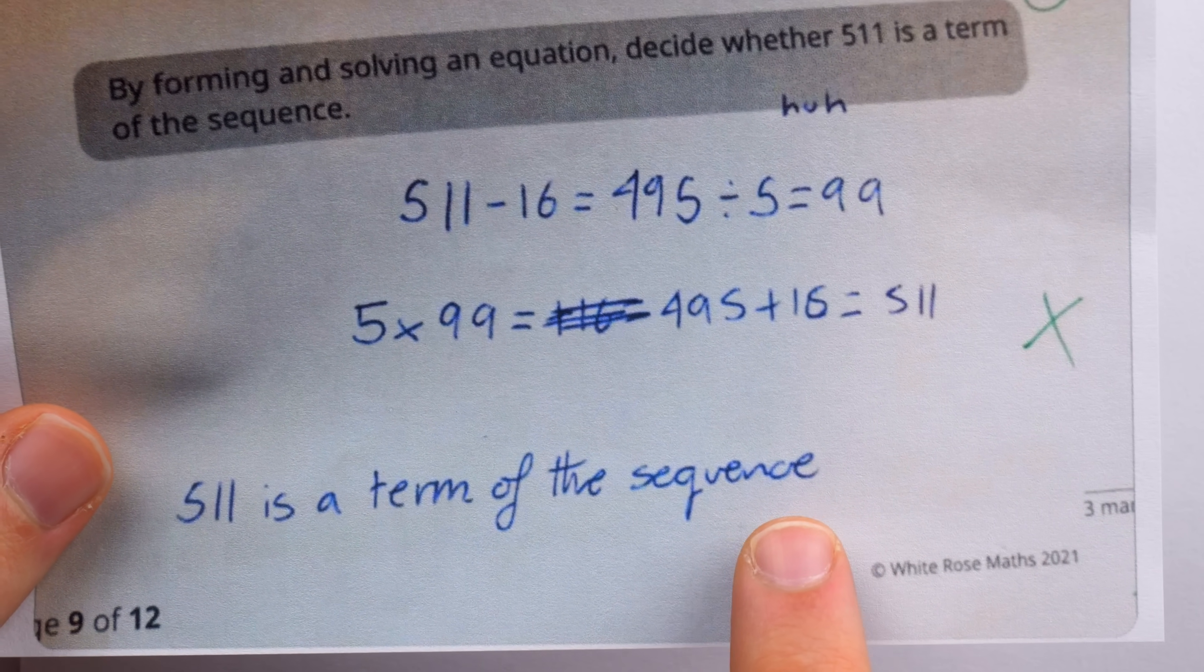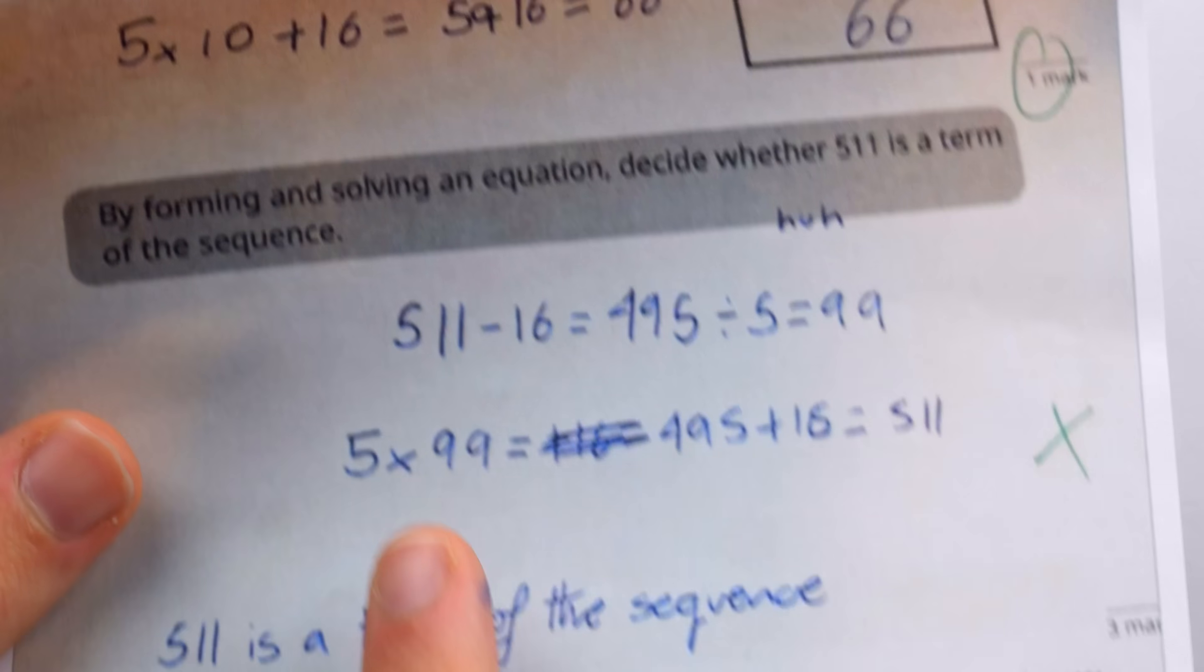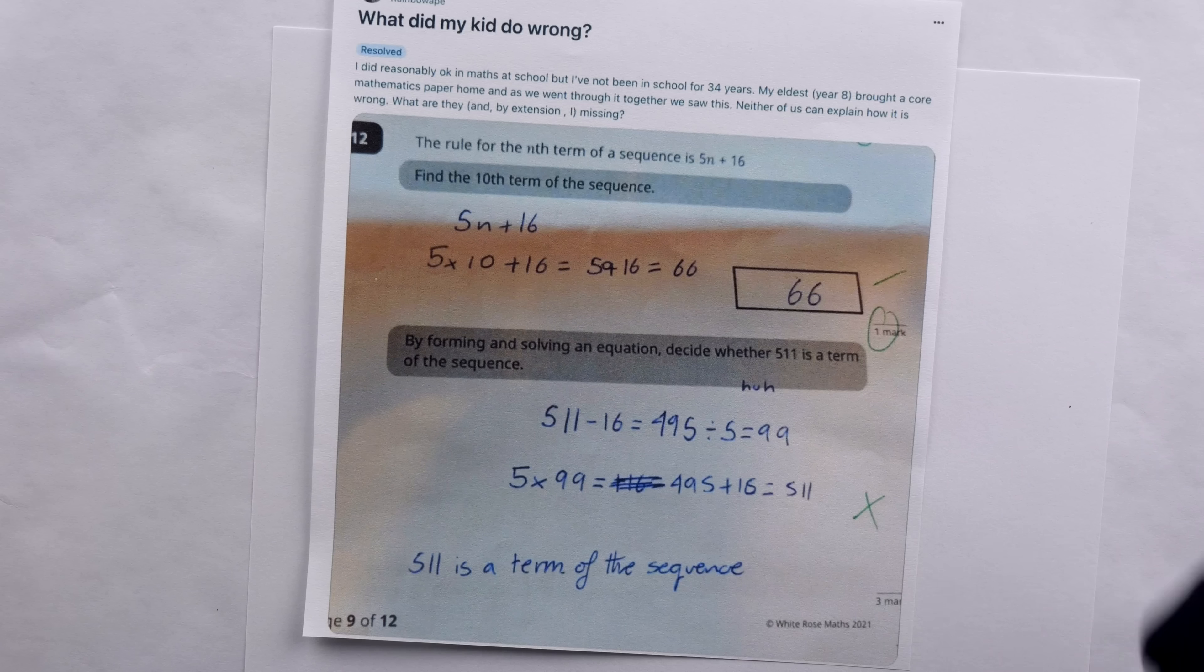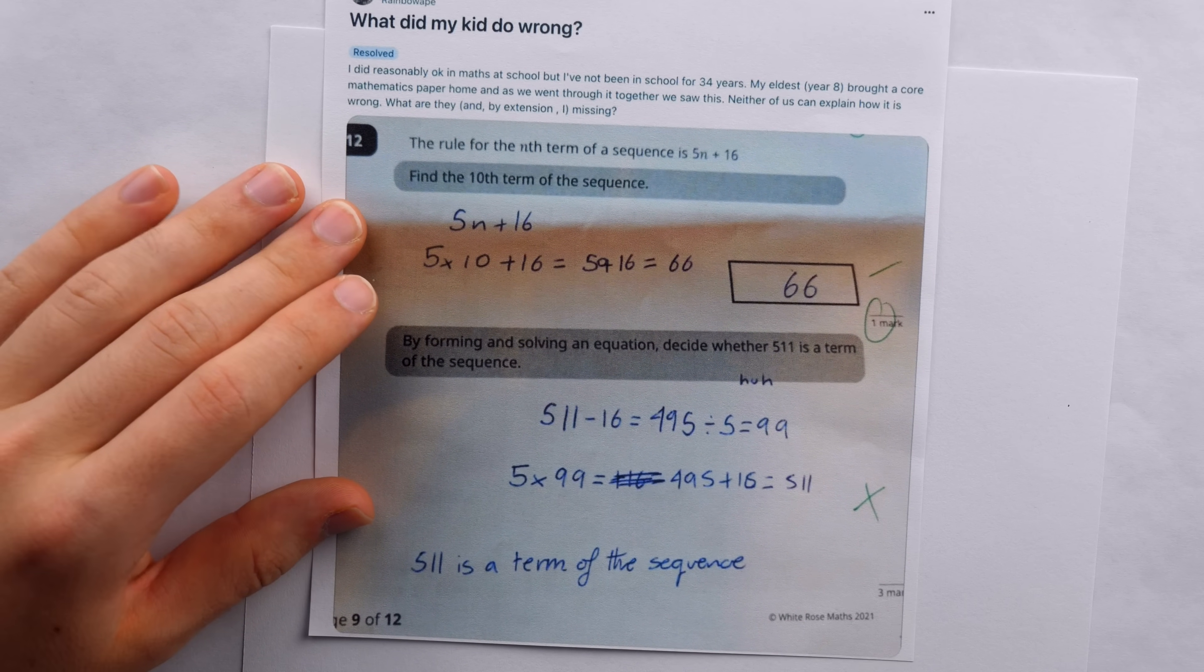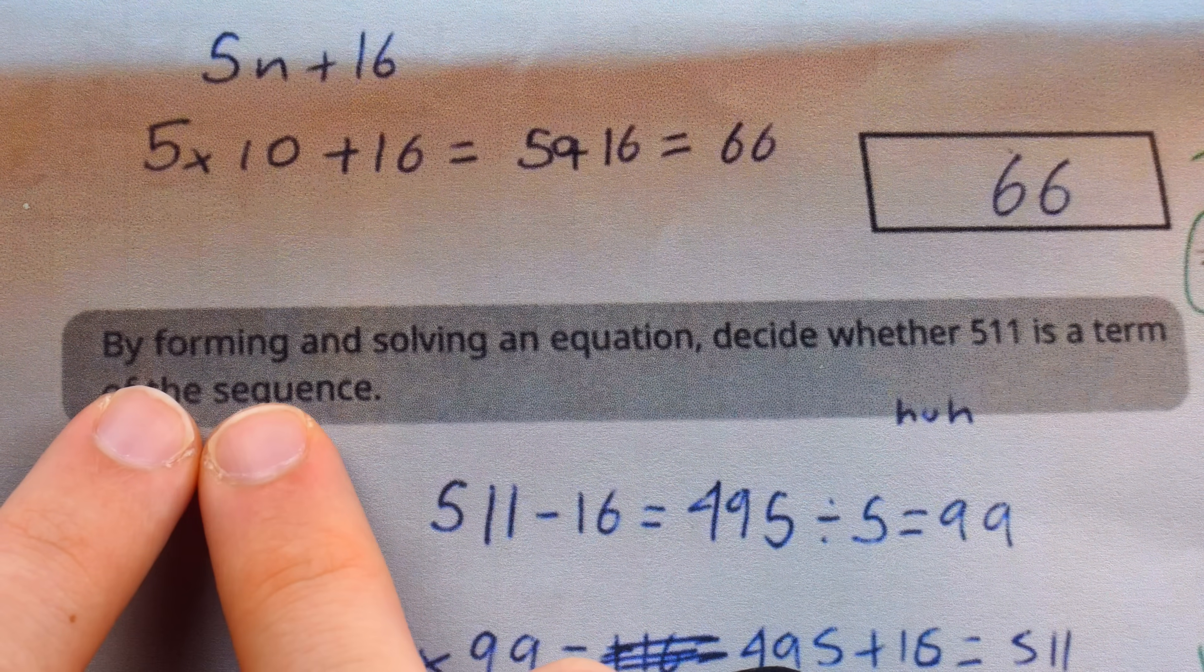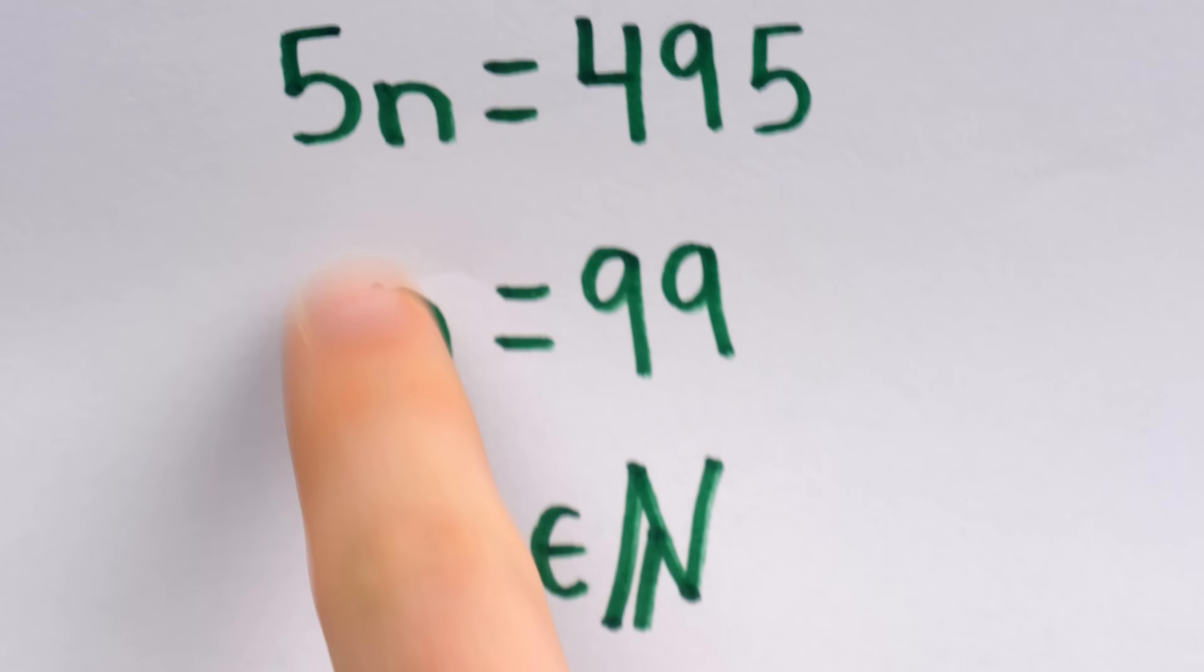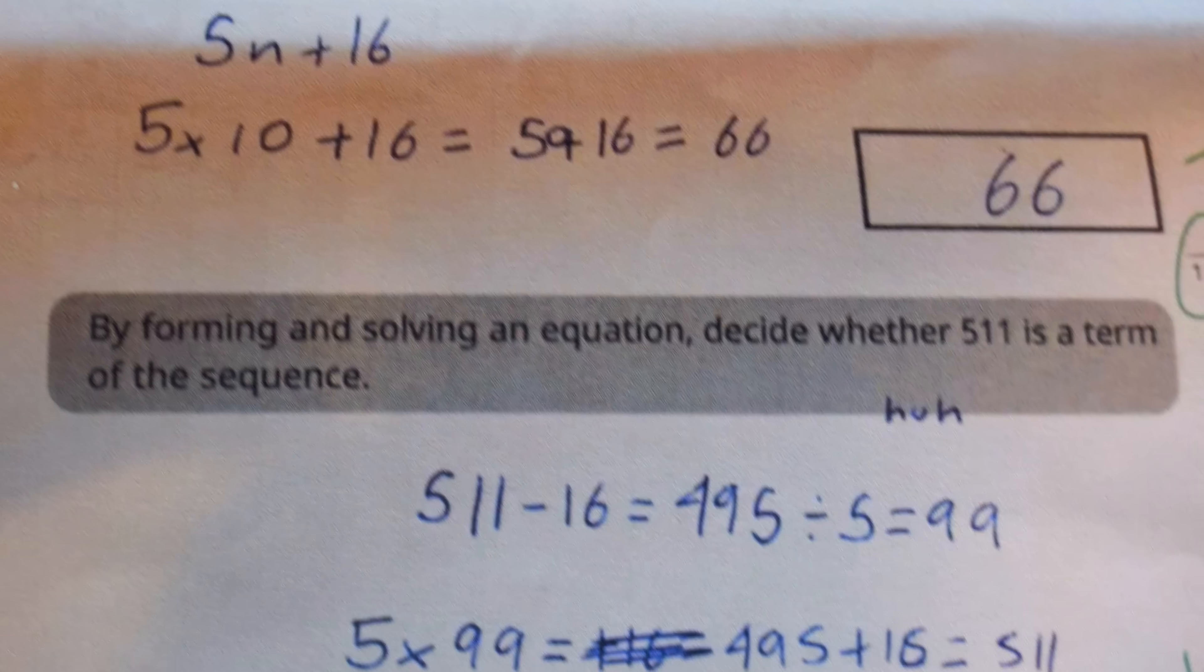They even went a step further and checked their work by plugging 99 in to the expression. You see this, 5 times 99, and finding that yes indeed you get 511. Correct answer, correct reasoning, checked work, zero points. Obviously when you put it that way, it sounds pretty bad for the teacher, but we must draw our attention, of course, to the instructions. The instructions said that we were supposed to form and solve an equation. And remember, that's what we did. We formed an equation and we solved for n. Of course, the student didn't use n, and in fact, they didn't really form an equation either.